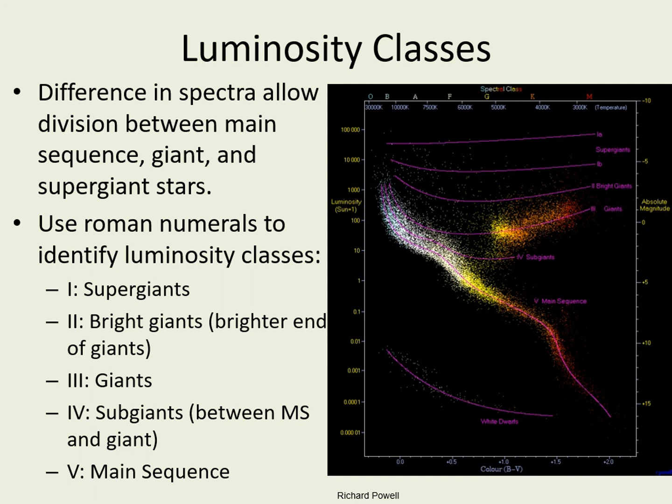I should also mention that white dwarf stars have very different looking spectra than other stars with the same temperature, so they're not usually included in the luminosity classes. This is partially due to the extremely high gravity in their atmospheres and partially due to the fact that they have very different composition from other stars — a result of how they evolved. We'll see more about this in the next presentation.